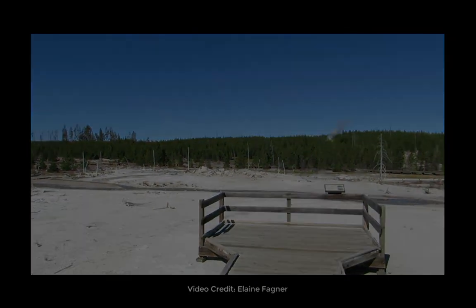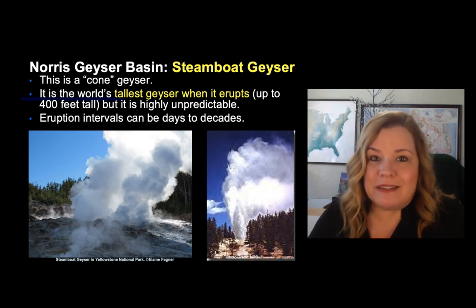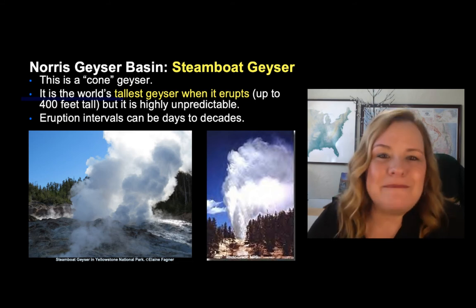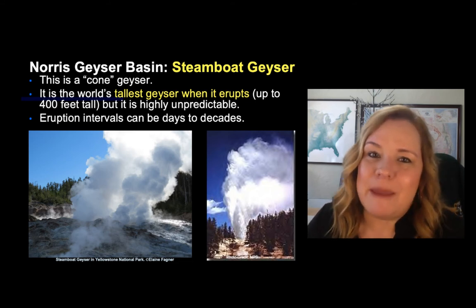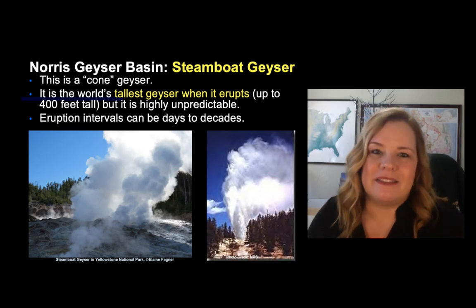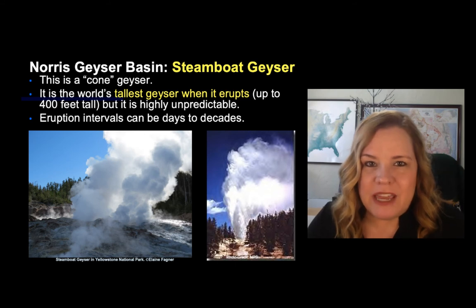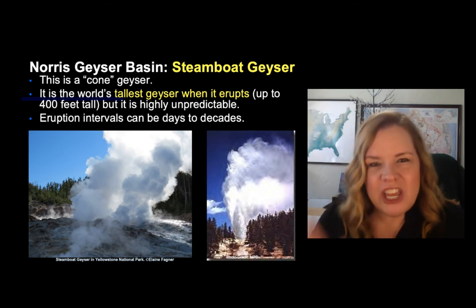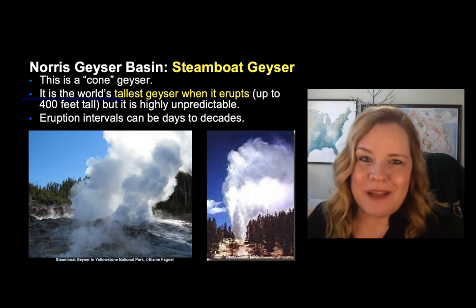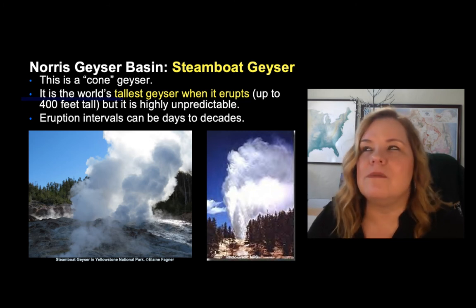The most famous geyser in Norris Geyser Basin is the least predictable — Steamboat Geyser. When Steamboat erupts, it is a big deal — newsworthy — because it has such an unpredictable schedule. Literally, it's been just a few days up to a 50-year interval between eruptions. The last time I was there, I met a park ranger and asked if he'd seen it go off.